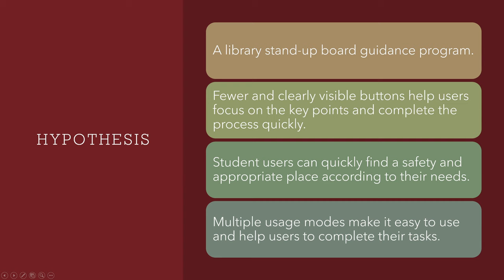A library guidance program stands out with a signboard that can display the QR code of the program, and users scan it by camera to launch the software. This reduces contact with others and does not force users to download anything. If users do not have a cell phone or are in an inconvenient situation, the sign can be used by touch. Fewer and clearly visible buttons help users focus on key points and complete the process quickly. Users can find a safe and appropriate place according to their needs, and multiple usage modes make it easy to complete their tasks.